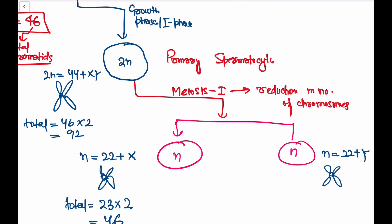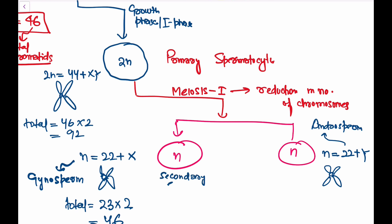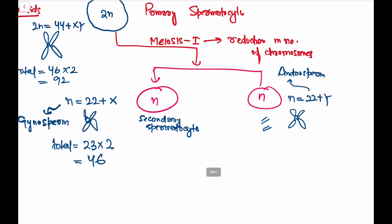The cell with the X chromosome is called a gynosperm secondary spermatocyte — if this sperm fuses with the ovum, a female fetus forms. The cell with the Y chromosome is called an androsperm secondary spermatocyte — fusion with the ovum gives a male fetus. Both are called secondary spermatocytes.